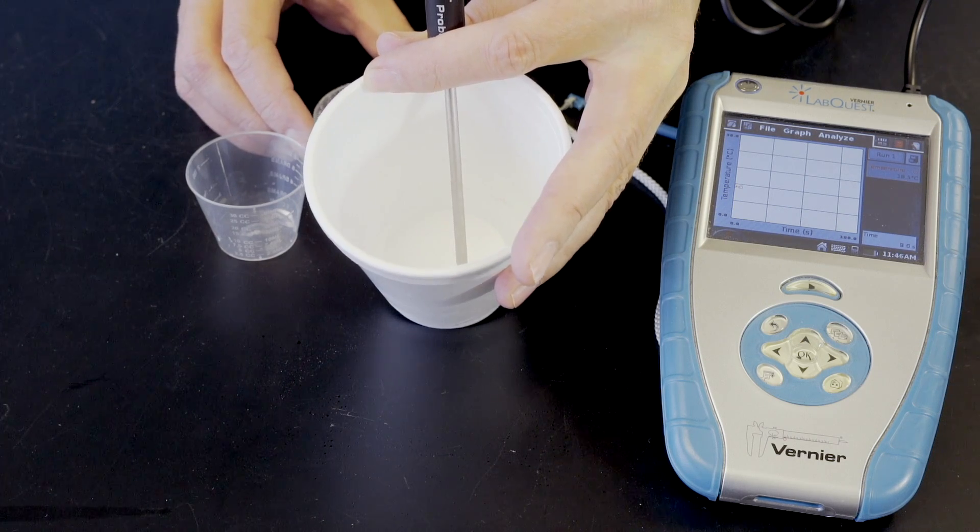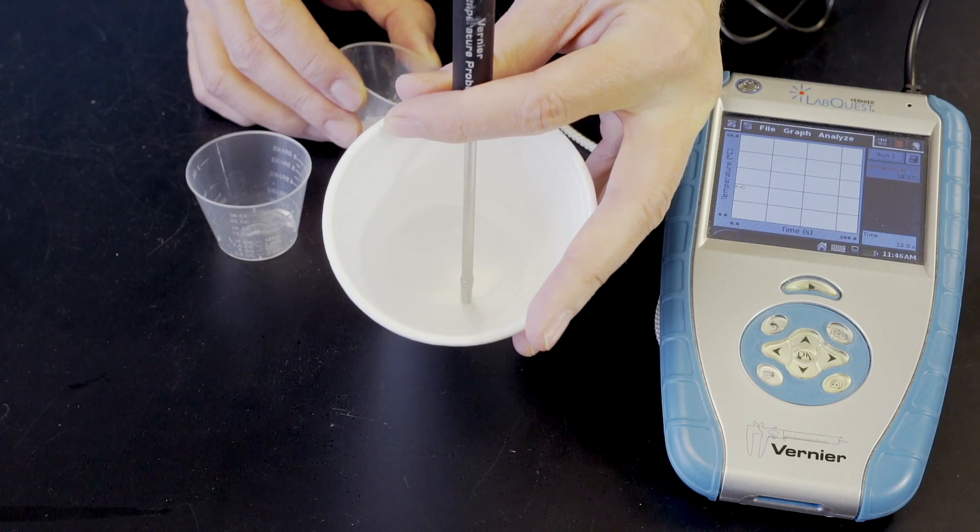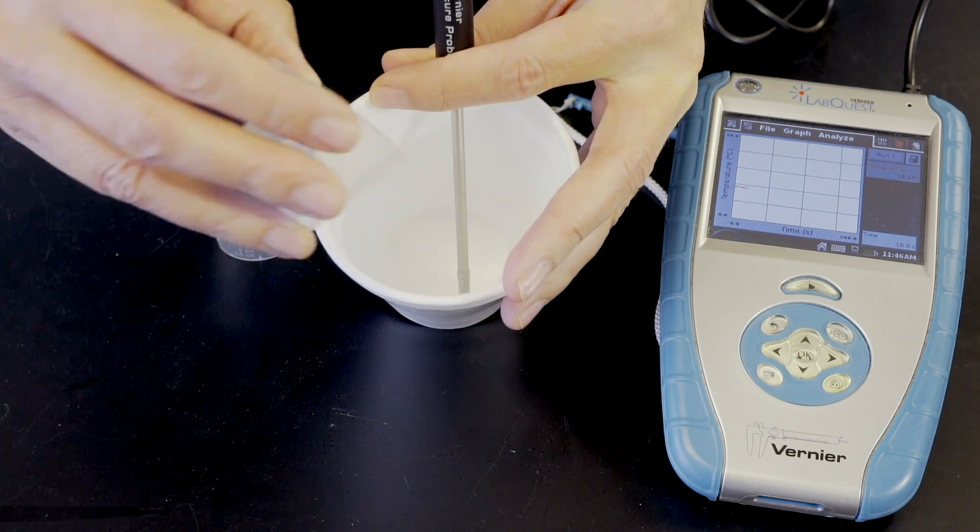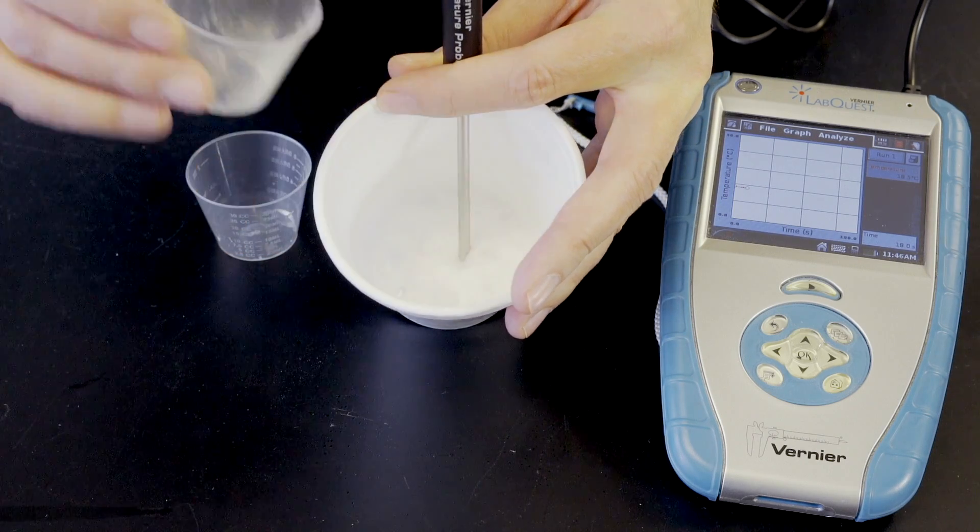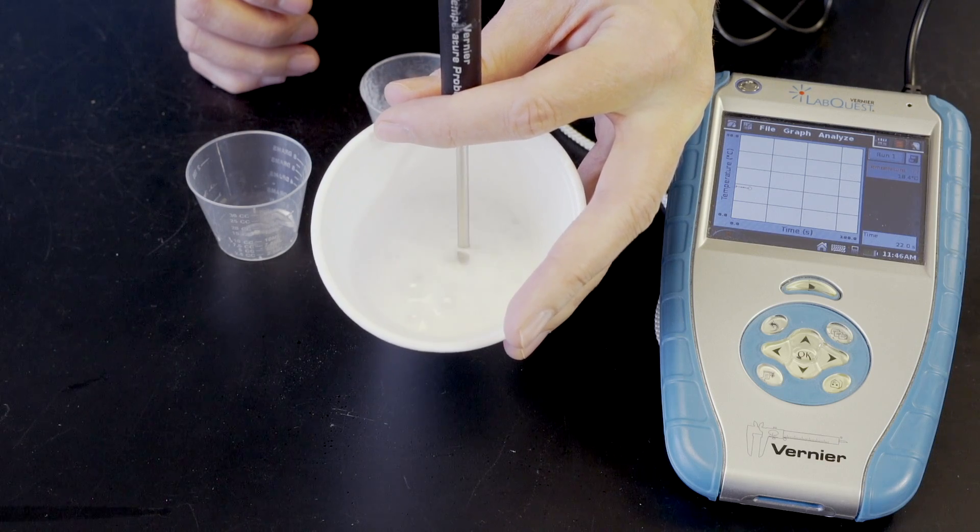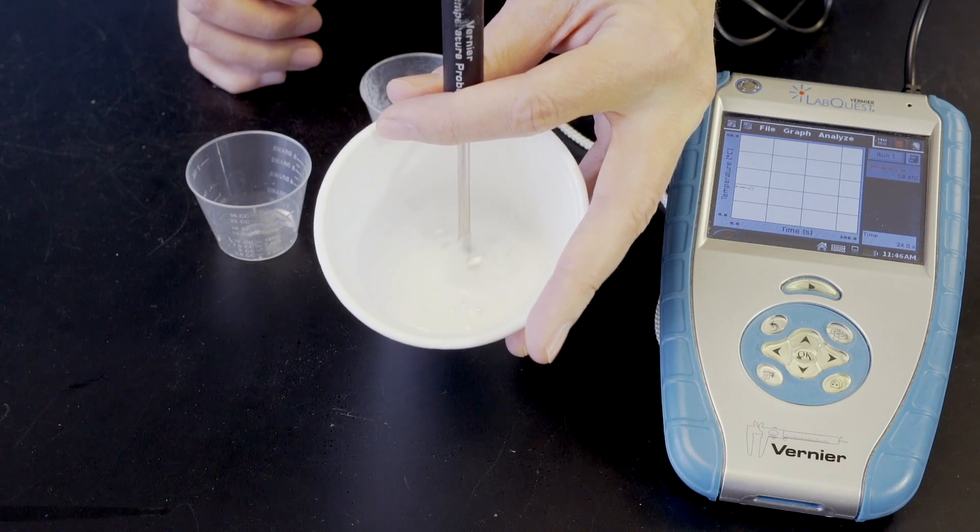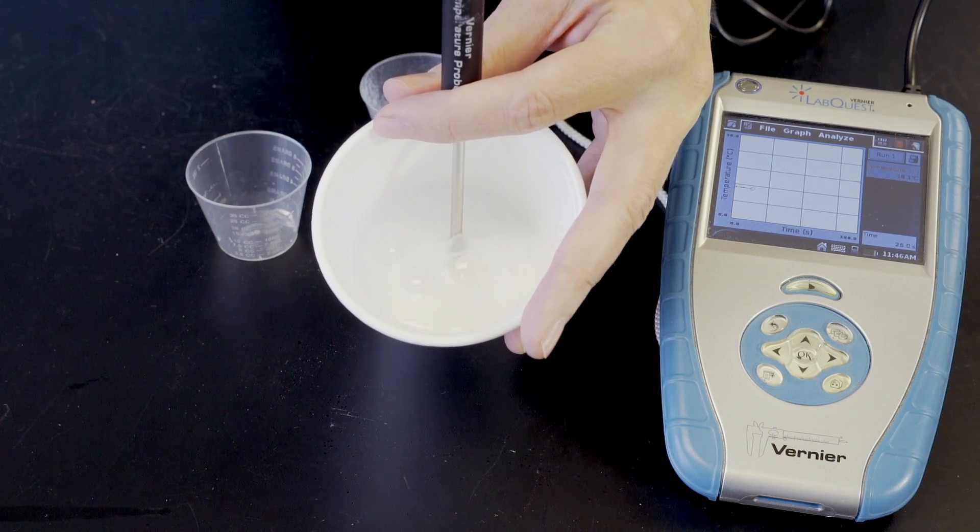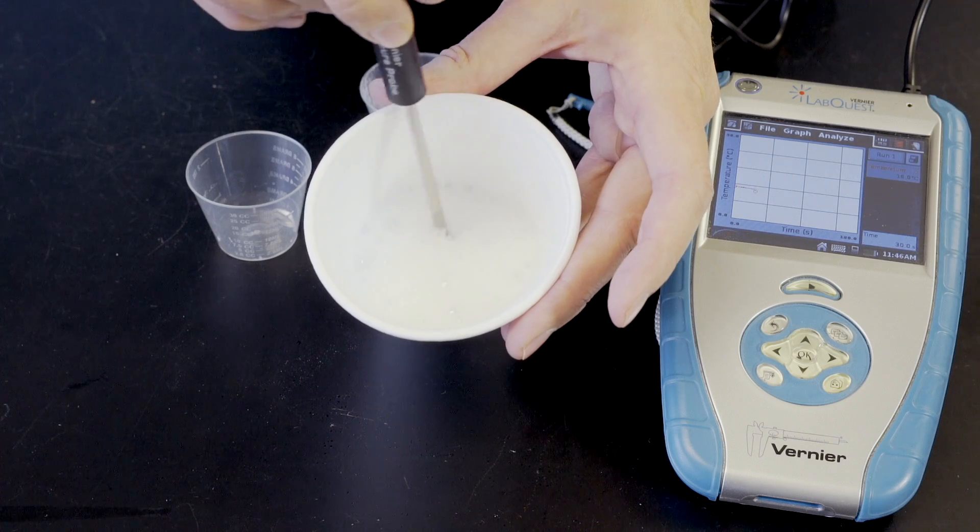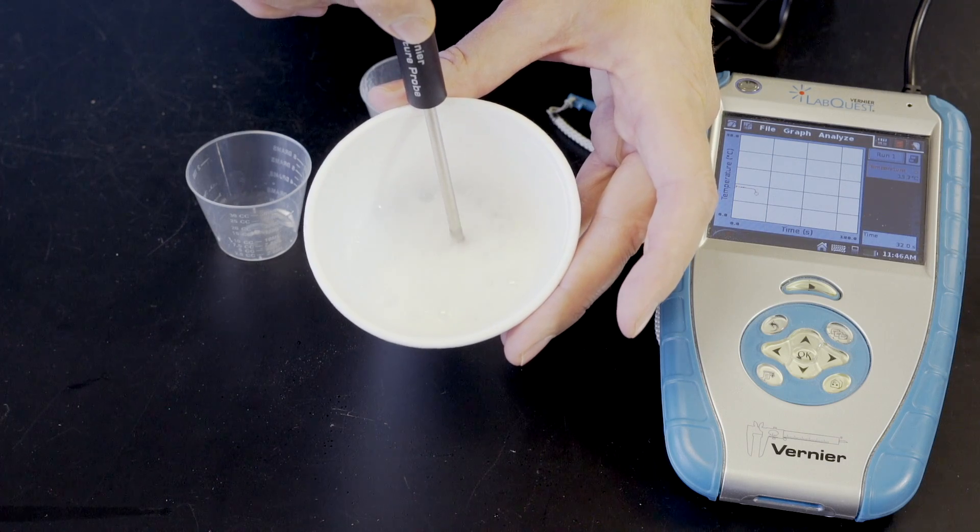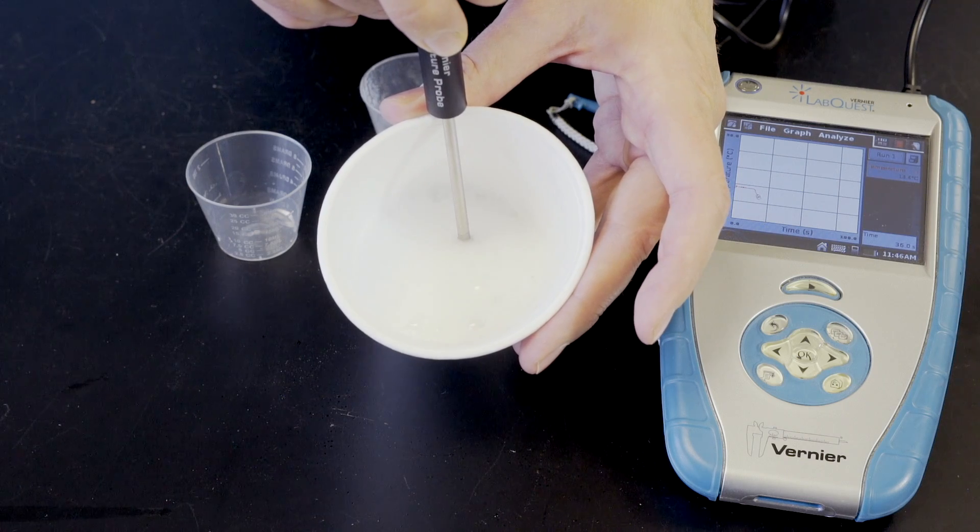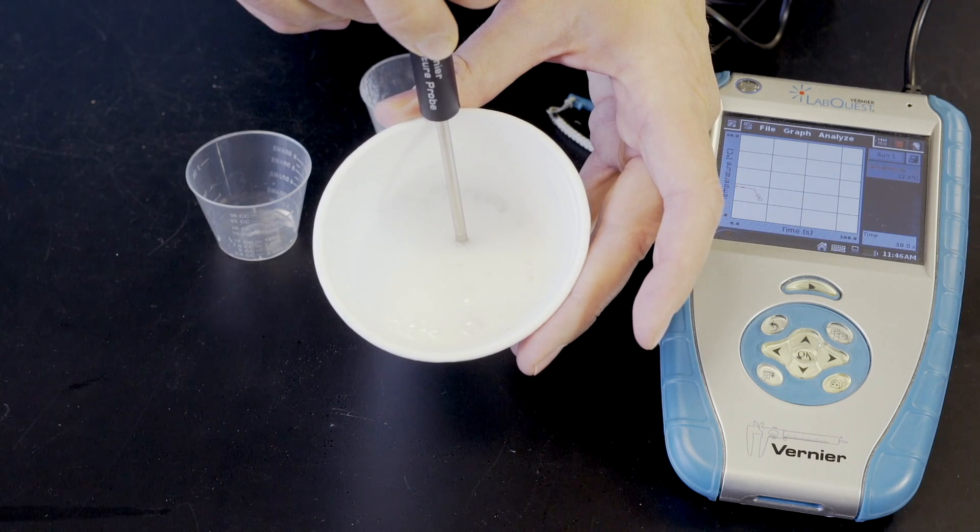We let this record for about 5 seconds until 10 grams of baking soda is added to the acid. I'll gently stir with the temperature probe. Look for the 4 signs that a chemical reaction is taking place that you learned in the last lab.